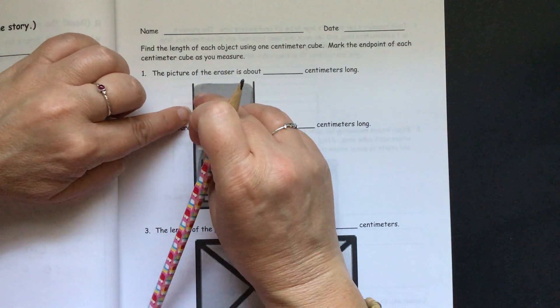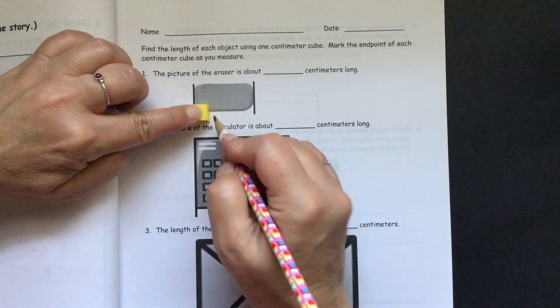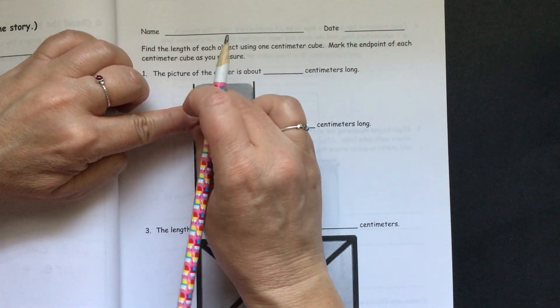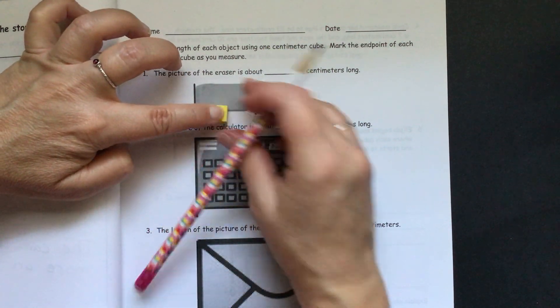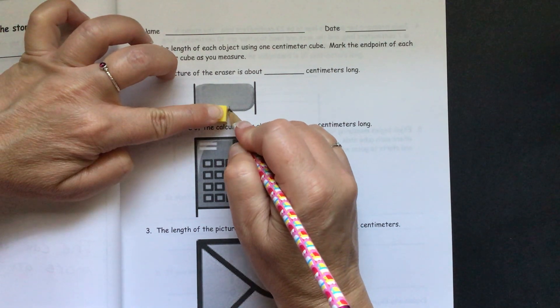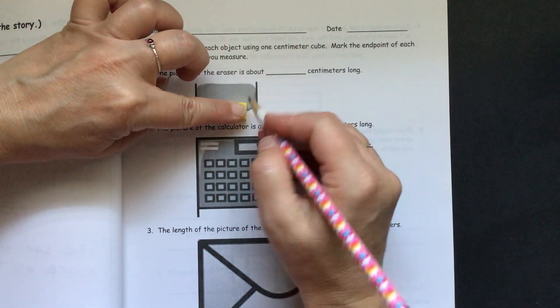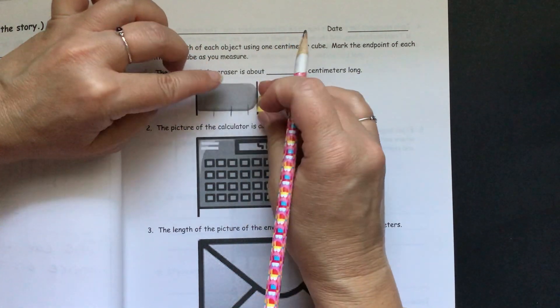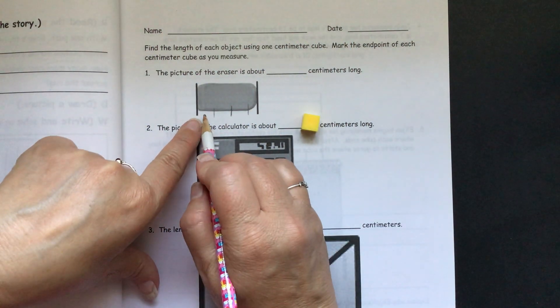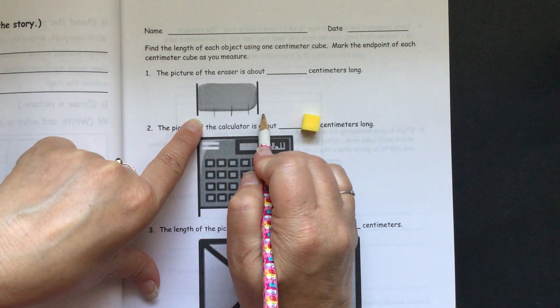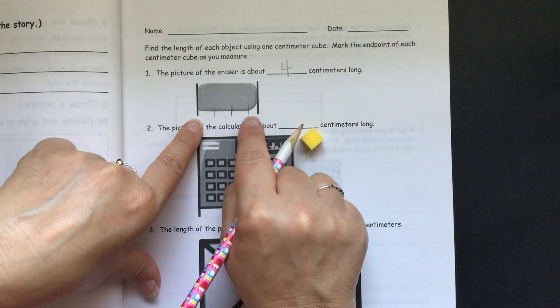So we need to make sure that we're measuring between these black lines. So we put our centimeter cube there. We draw a line. You see the line I drew? And then I'm measuring it. I'm lining it right up there with that line I drew. And there's another line here. And I'm lining it up there. And it mostly is covered. So we have one, two, three, and some. So we'll put four here because it's more than three.